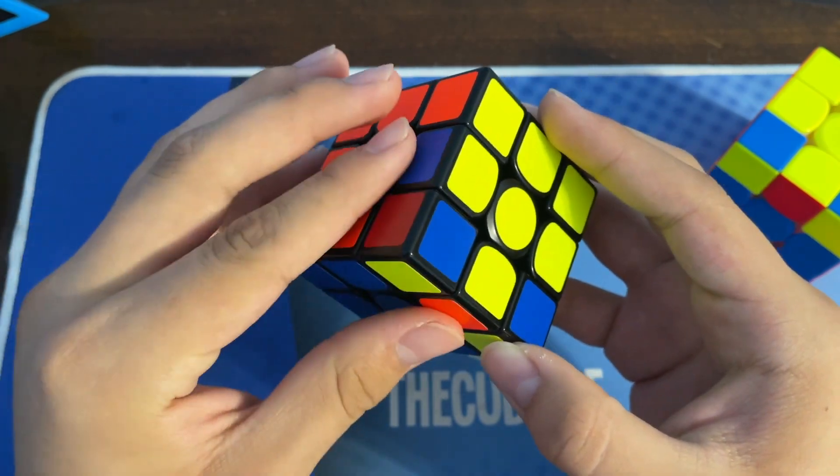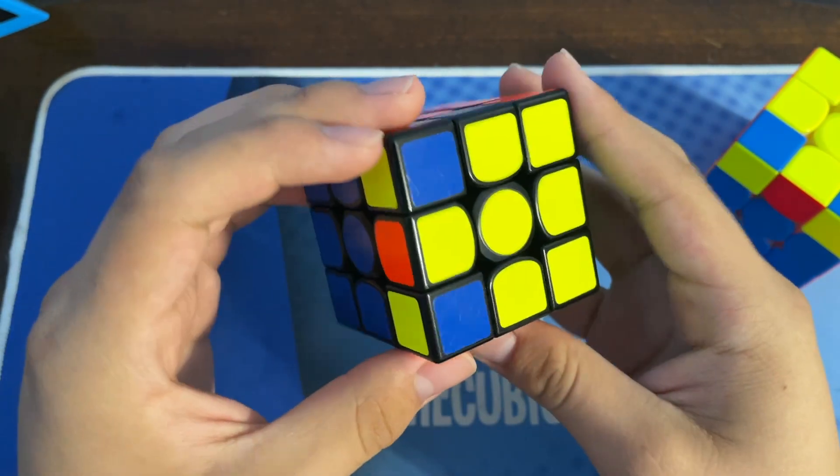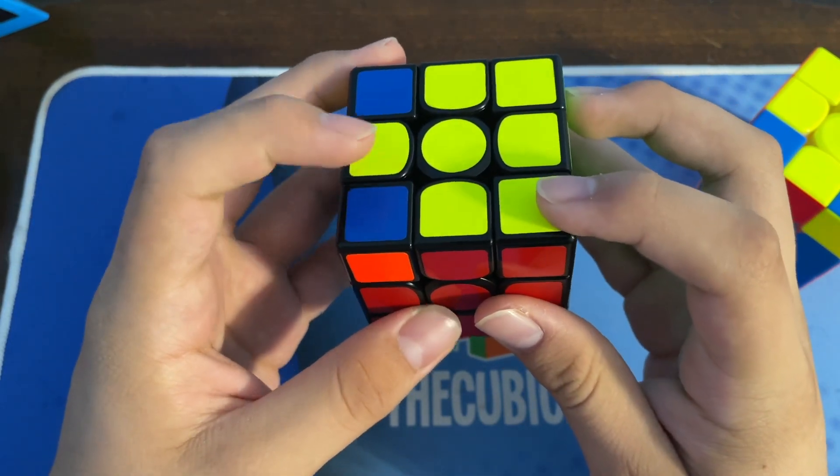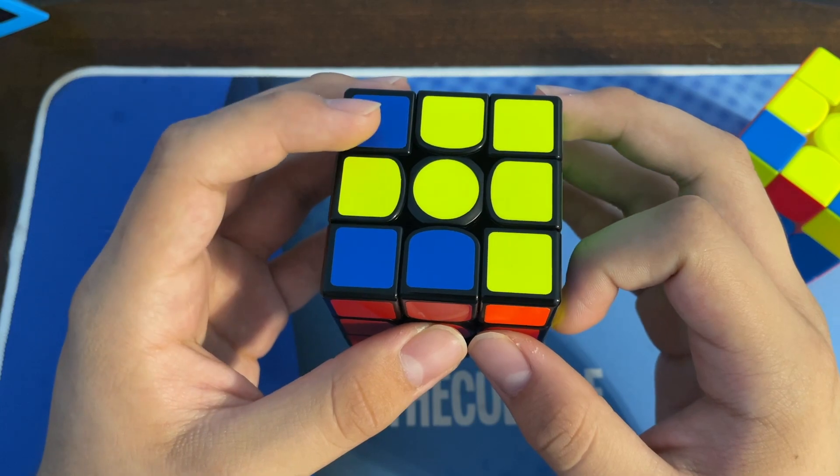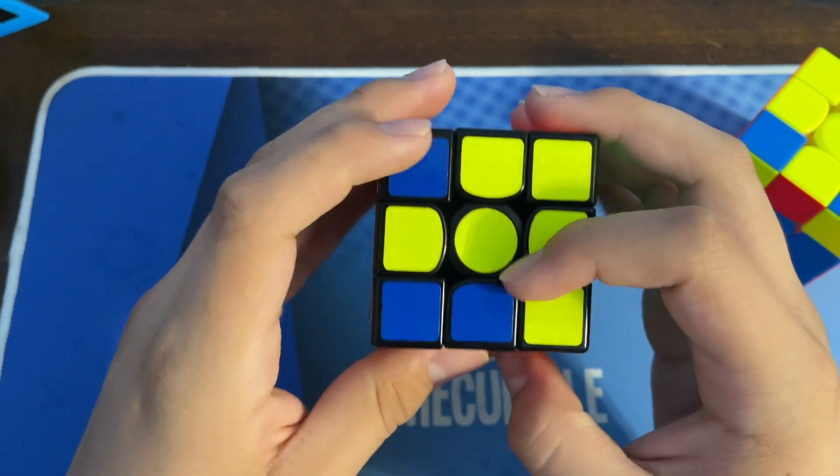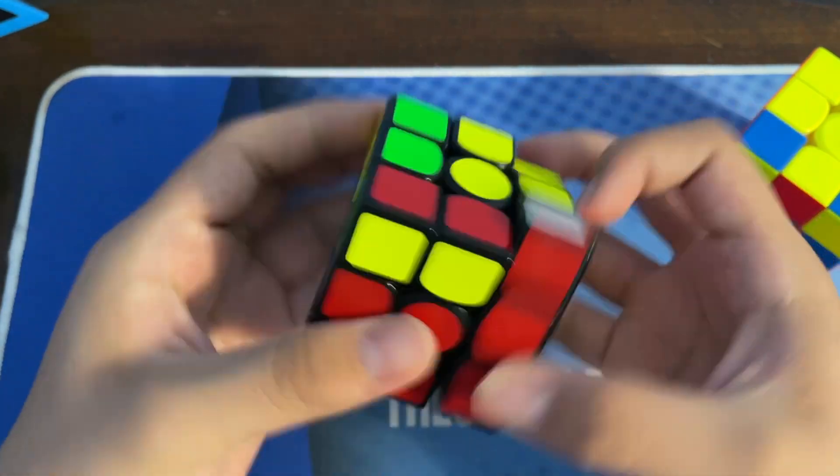The way you would do it is you first move this corner all the way here, and then you do this. This will be a setup to a Y perm, so you do the Y perm and there it should be solved.